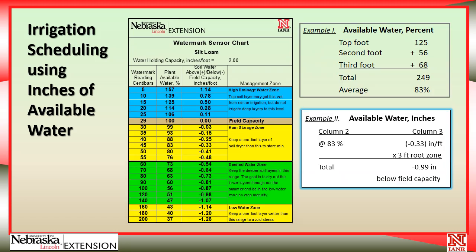There's a shortcut method to get to this answer more quickly. Knowing we're trying to calculate how much water the soil can hold before going above field capacity, we can draw a box showing zeros at field capacity. At 83% of plant available water — calculated in the previous video — each of the three feet on average could hold 0.33 inches, just bringing them to field capacity. Multiplied by three feet, that's 0.99 inches — a rounding difference from the other method.